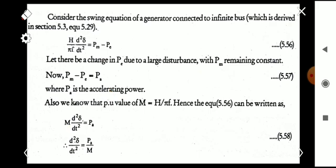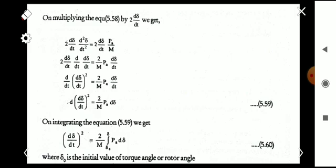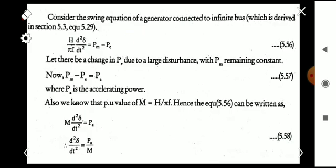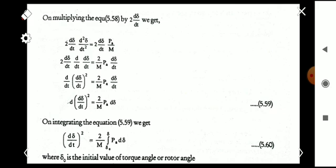From M into d squared delta by dt squared equals P_a, we get d squared delta by dt squared equals P_a by M. This is a second-degree equation. We multiply both sides by 2 times d delta by dt, giving: 2 times (d delta by dt) times (d squared delta by dt squared) equals 2 times (d delta by dt) times (P_a by M).